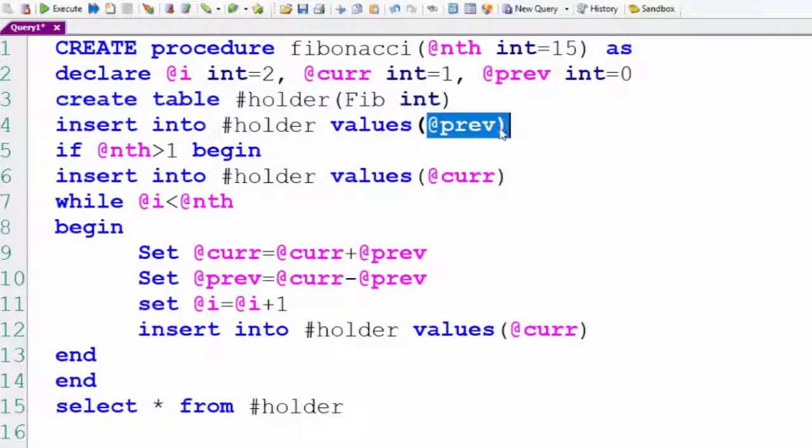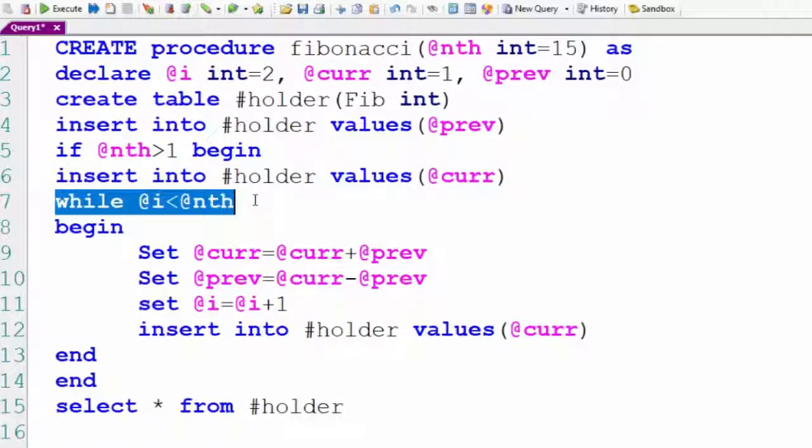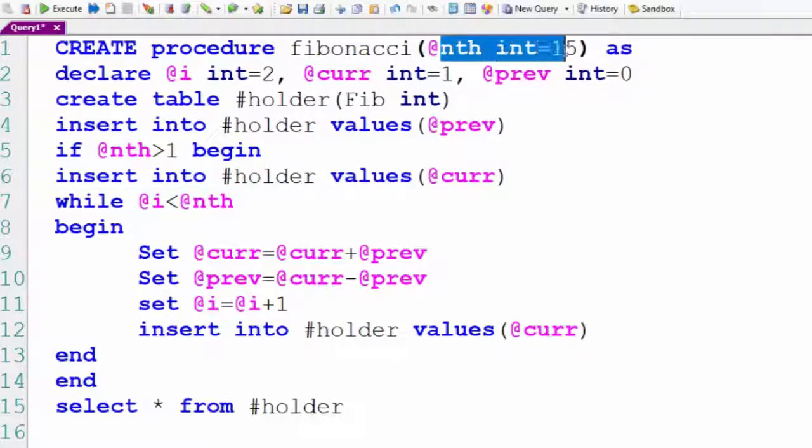We're going to insert into holder @previous, so the zero goes in. If nth is greater than one, we're going to insert into the holder @current, so now we'll have a zero and a one. Now we're going to loop while i is less than, in this case, fifteen. We'll begin.